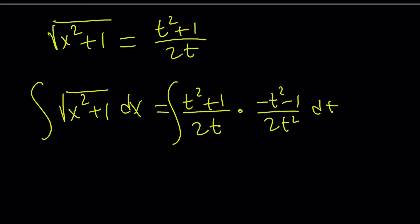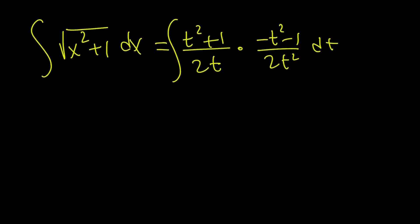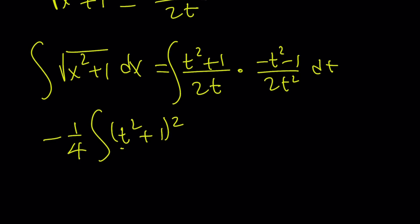The radical expression √(x² + 1) · dx turns into something nicer — a polynomial divided by a monomial, so it's easy to separate. We can take out a -1/4, and inside we have (t² + 1)² / t³ dt. Let's expand (t² + 1)²: that is t⁴ + 2t² + 1 over t³ dt.